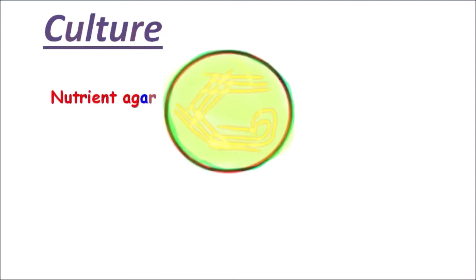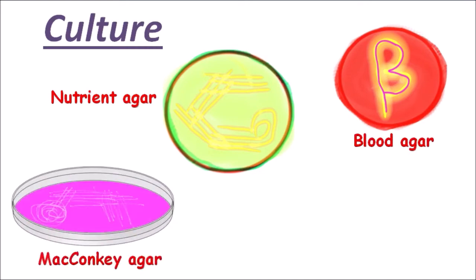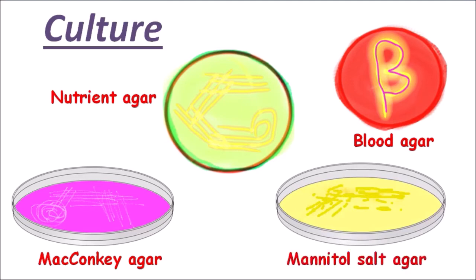Staphylococcus aureus produces yellow colonies which are golden on nutrient agar, measuring 1 to 3 millimeters in size. On blood agar it produces golden yellow colonies surrounded by beta hemolysis. On MacConkey agar it produces pink lactose-fermenting colonies. On mannitol salt agar it produces yellow colonies.